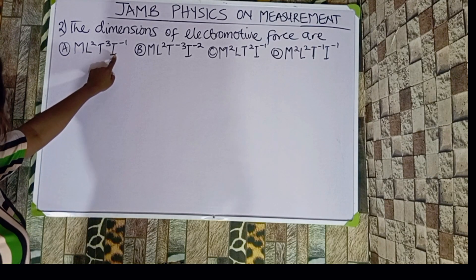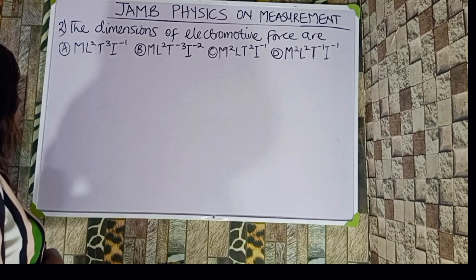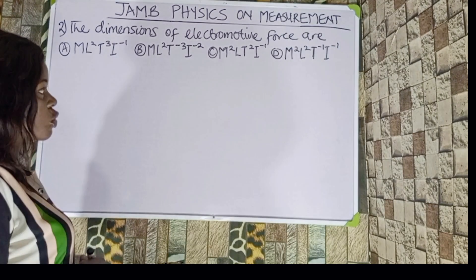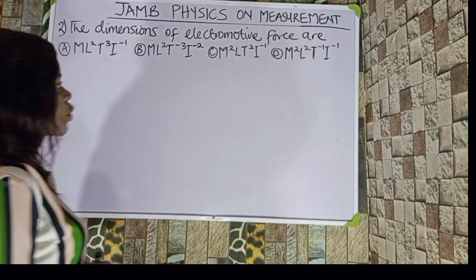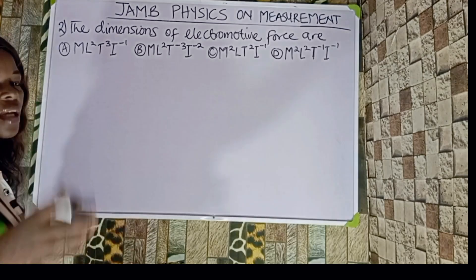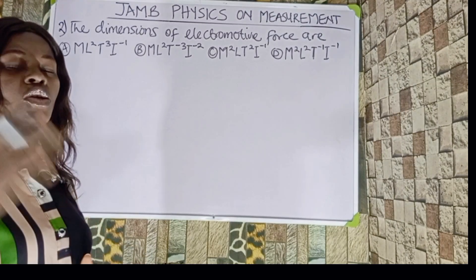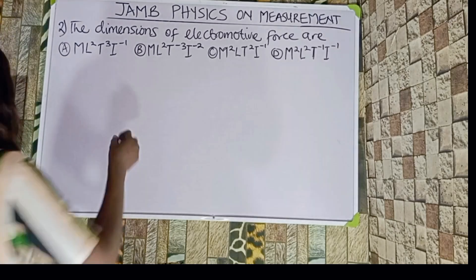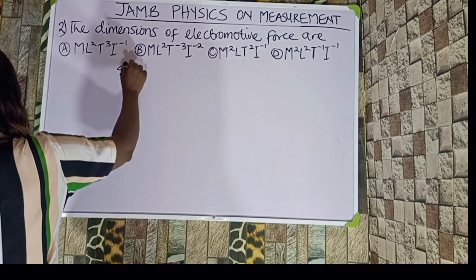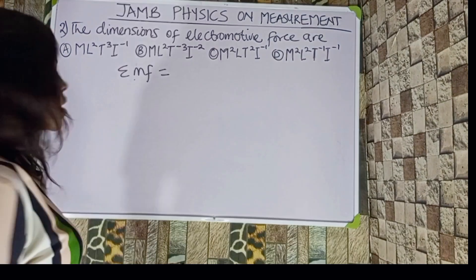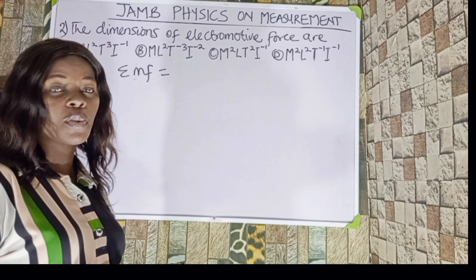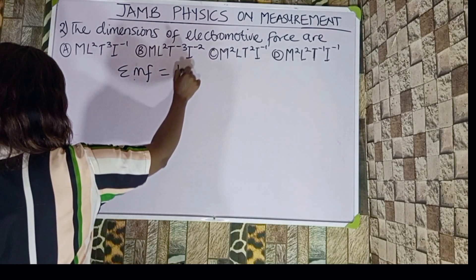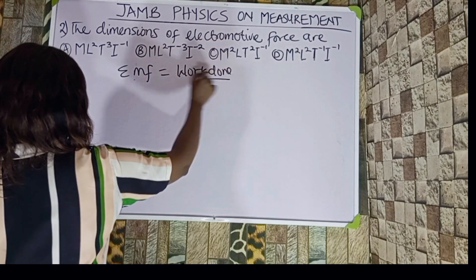The dimension of electromotive force: option A is ML²T⁻³I⁻¹, option B is ML²T⁻³I⁻², option C is M²LT²I⁻¹, and option D is M²L²T⁻¹I⁻¹. The first thing that will come to your mind is: what is electromotive force? Electromotive force, or EMF, is defined as the work done in carrying a unit positive charge from one point to another in a circuit. So EMF equals work done over charge.